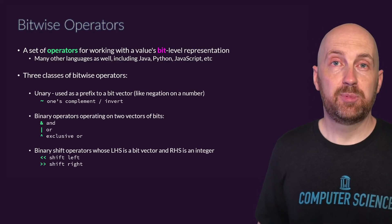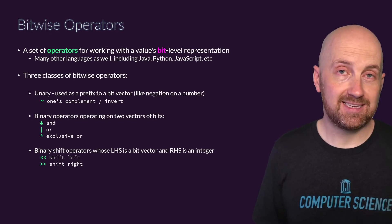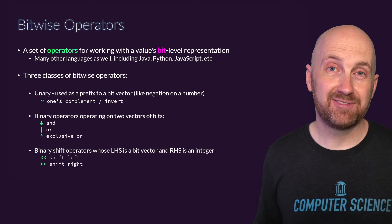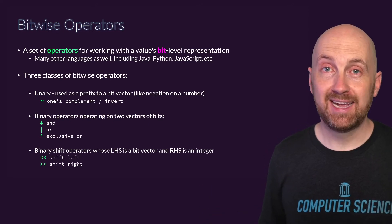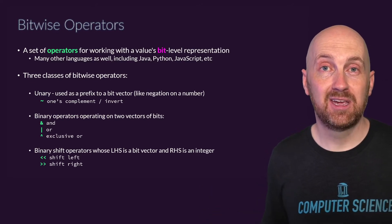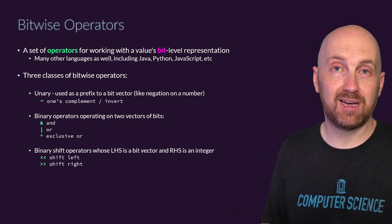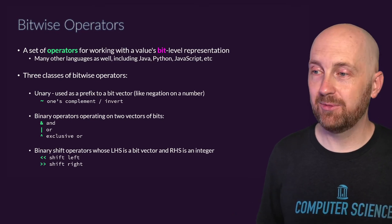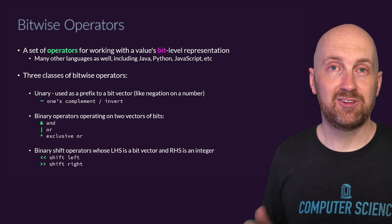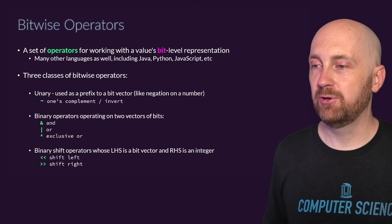There are three classes of bitwise operators we're going to look at. The first and easiest is the unary complement operator, which effectively flips every bit in some bit field — that's all it does. You can think of it as a complement to the NOT operator in logical Boolean algebra, but this works bit by bit, flipping each bit in your field.